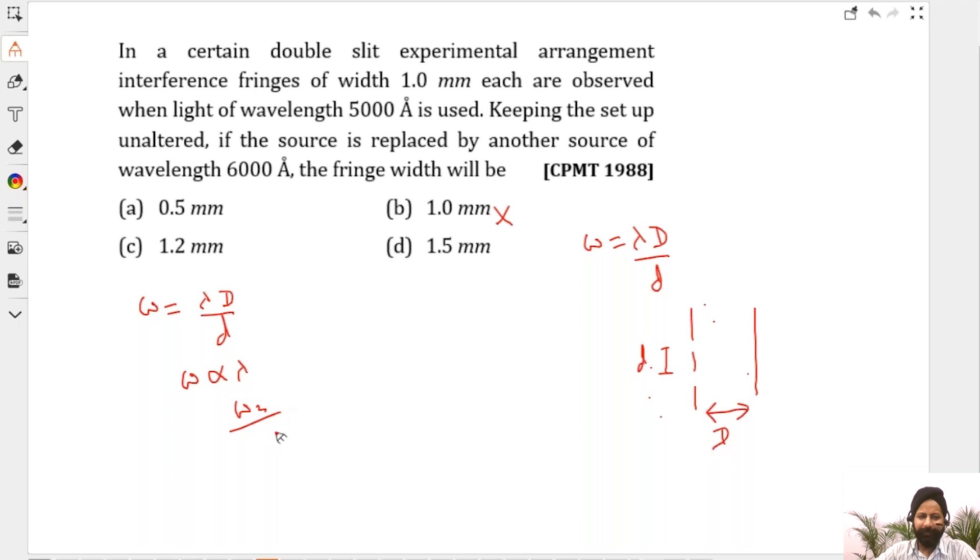So new fringe width divided by the old fringe width is the same as the new wavelength divided by the old wavelength. And that's all you do. So new fringe width divided by one millimeter is the new wavelength by the old wavelength, and that is 1.2.